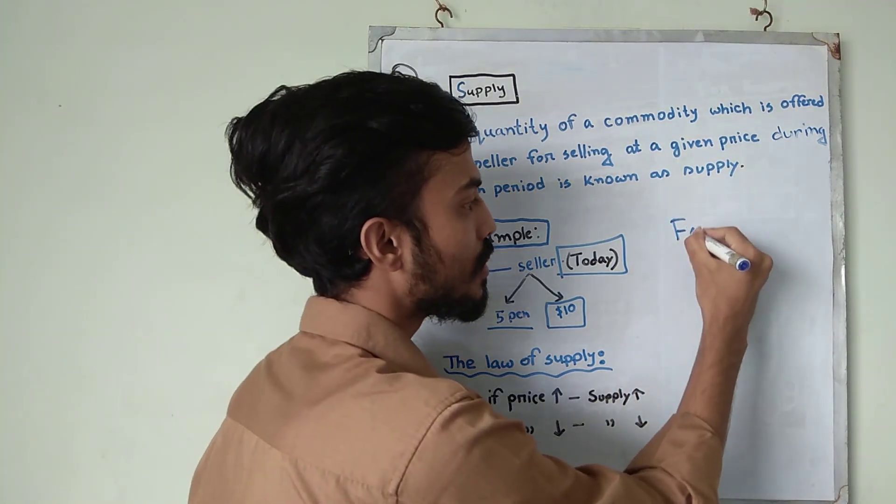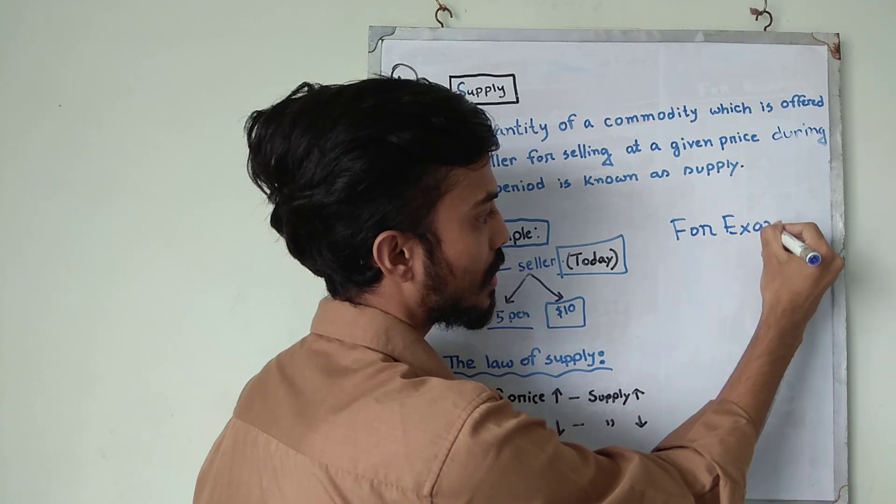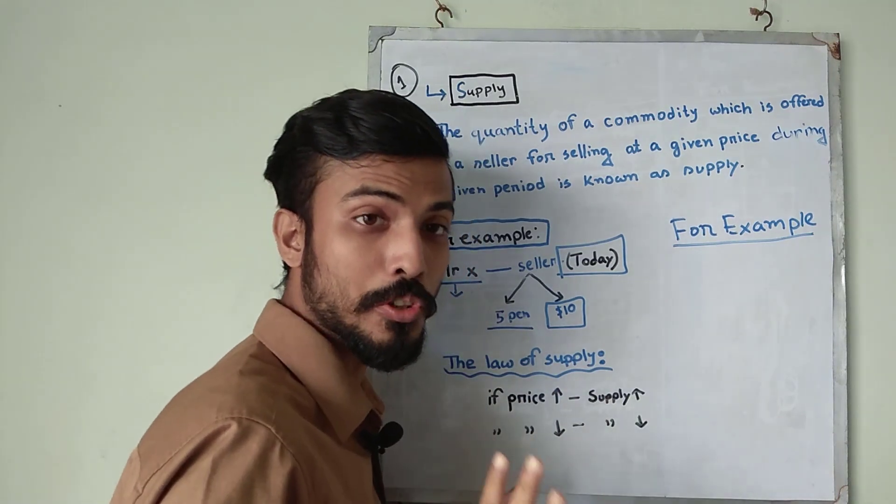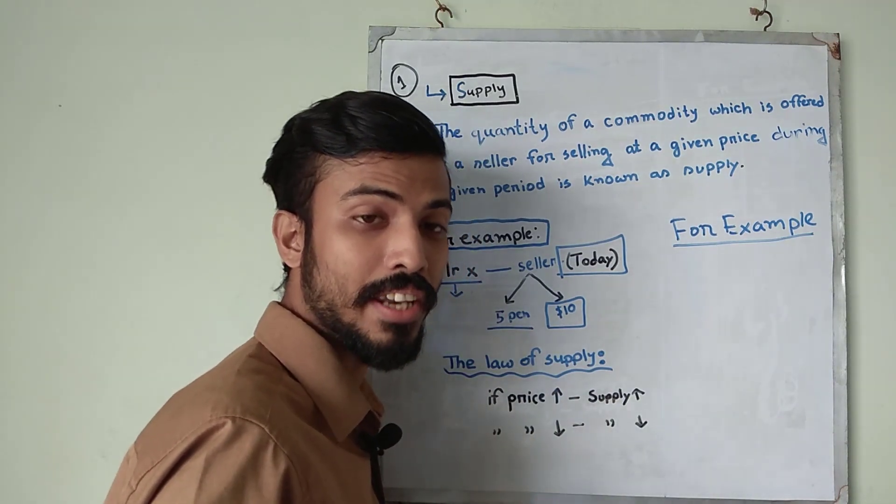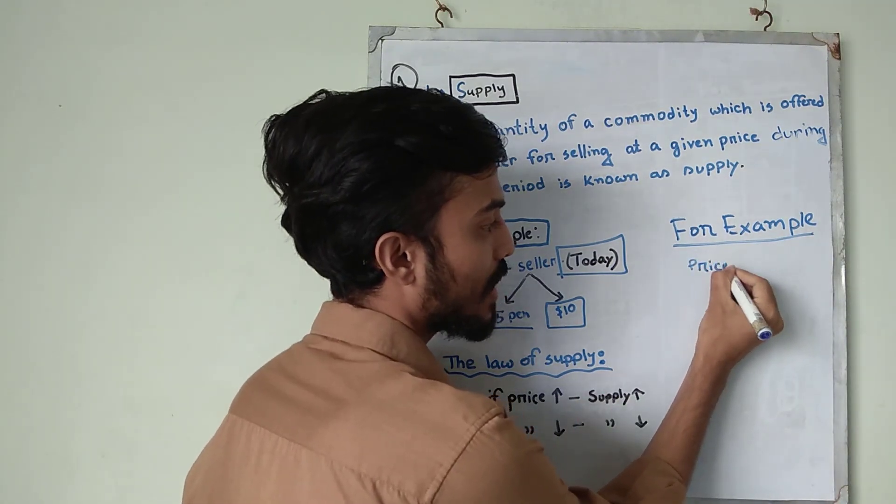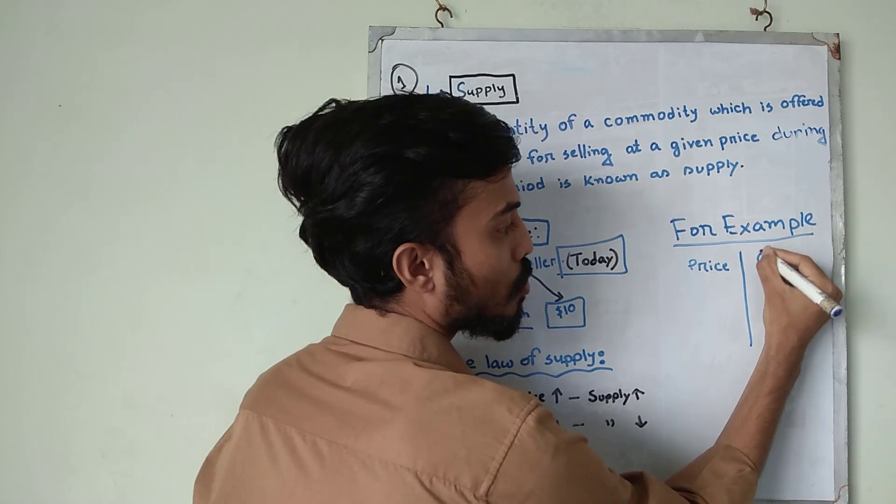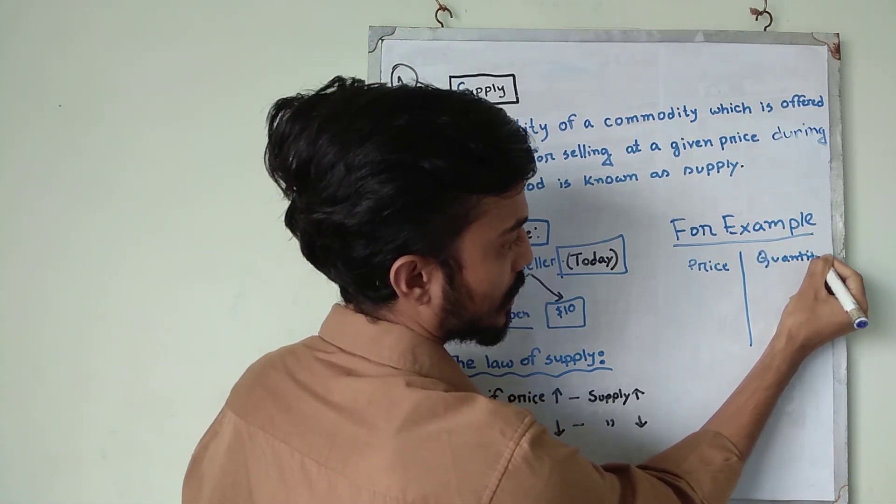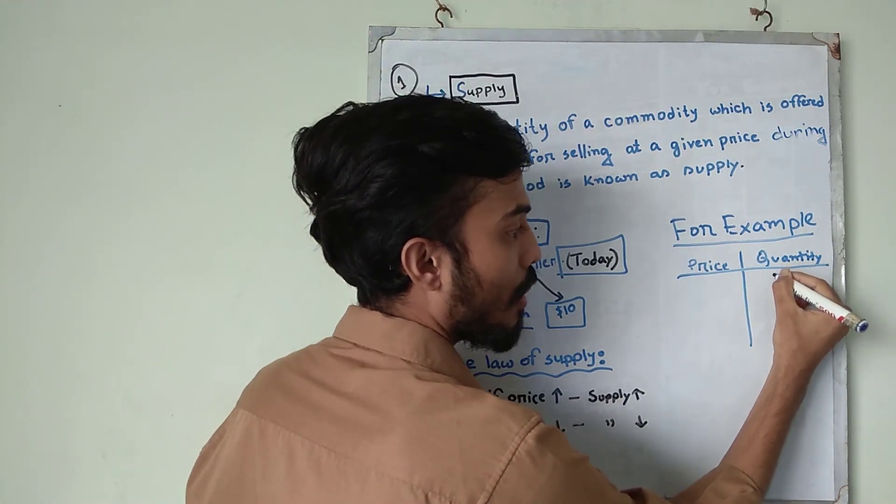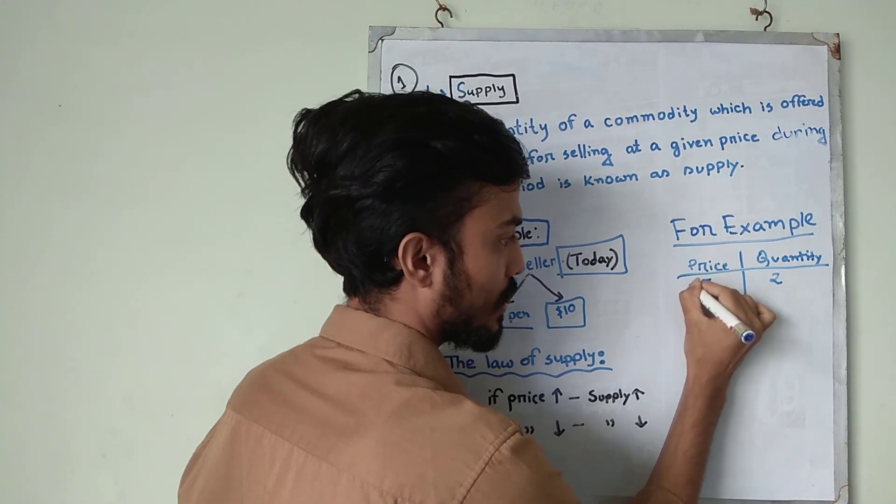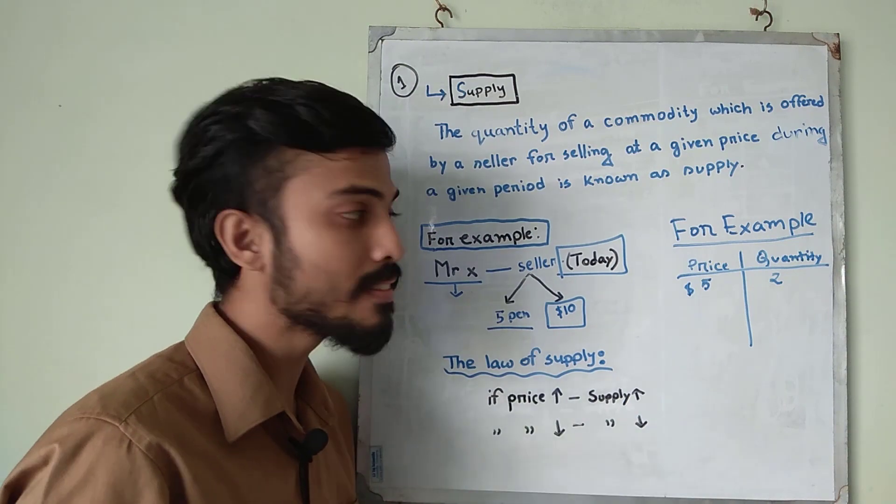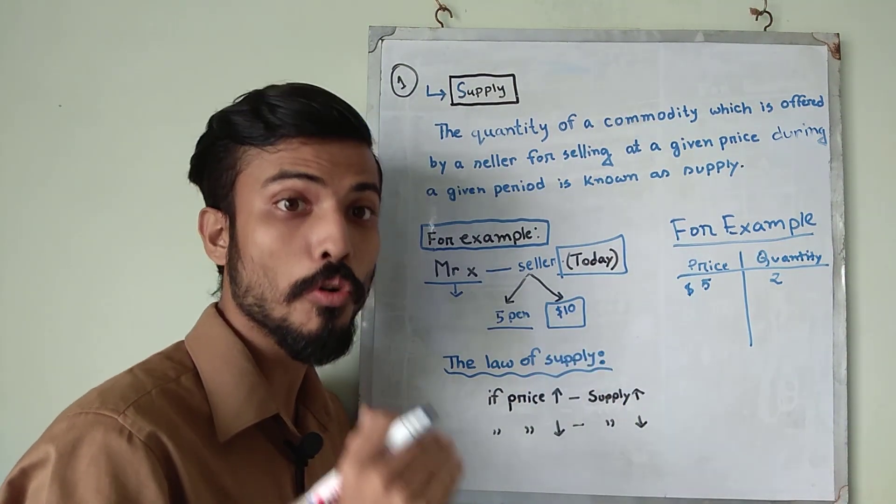So for example, you are a seller or producer and you have a factory and you make pens. So today you want to, let's say I am writing here price and here quantity. So today you want to sell 2 pens at $5 today. But tomorrow you found that the price of pens increased. So what you will do?